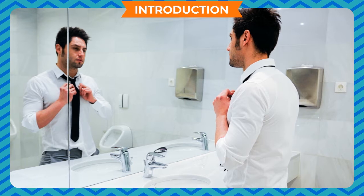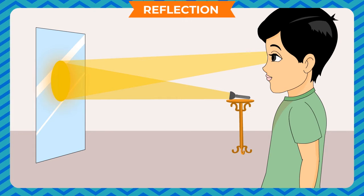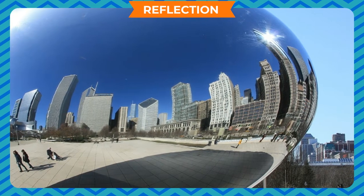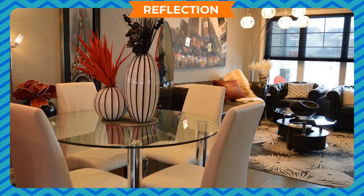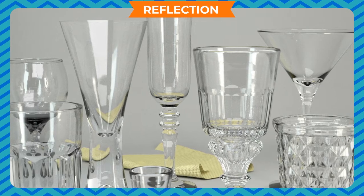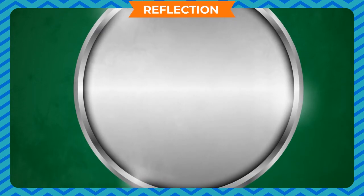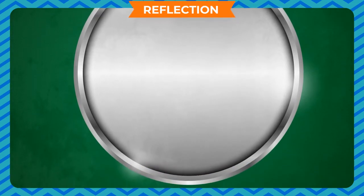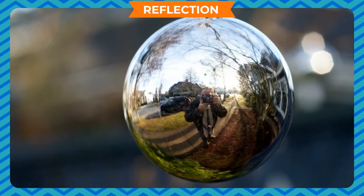Reflection is the cause of image formation. Whenever light falls on a polished surface, it bounces back in the opposite direction. This movement of the light back into the medium in the opposite direction is reflection. The amount of light reflected depends on the material and nature of the surface. An opaque body absorbs some light and reflects the remaining. A transparent body allows almost all the light to pass through and reflects very little. A smooth, highly polished surface such as a shiny stainless steel surface or a mirror reflects almost all the light that falls on it. There are laws which govern the process of reflection.